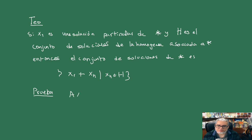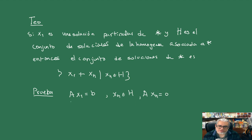Sabemos que A por x₁ debe ser b, y sabemos que vamos a tomar xh en H, de tal manera que A por xh va a ser el vector cero. Entonces, si tomamos x igual a x₁ más xh, y le aplicamos A a x por linealidad, esto es A·x₁ más A·xh, que es b más el vector cero, que es b.